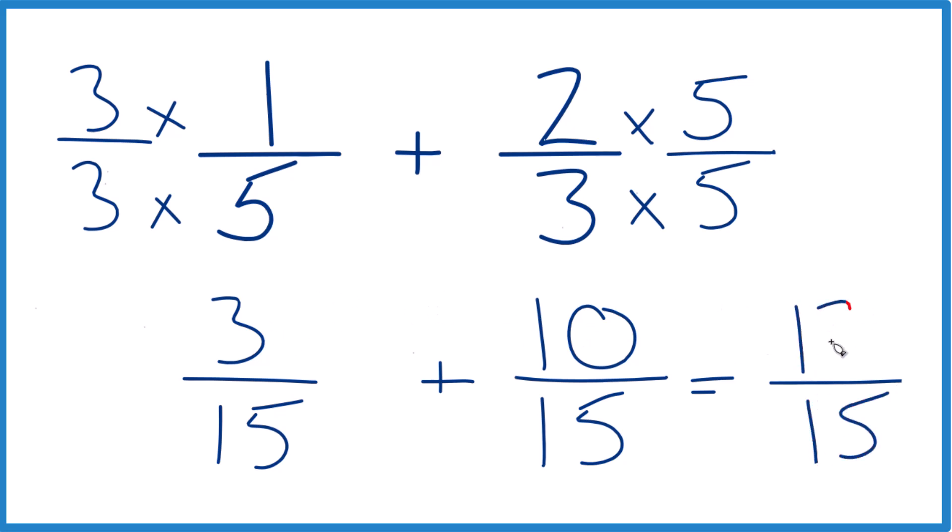Three plus 10, 13, and in answer to our question, one-fifth plus two-thirds is 13-fifteenths. This is Dr. B, thanks for watchin'.